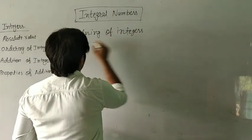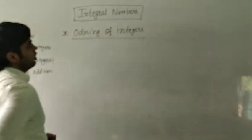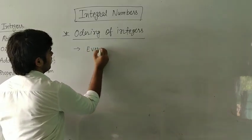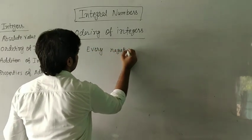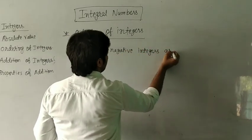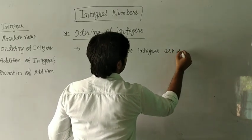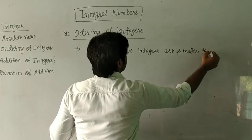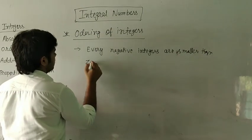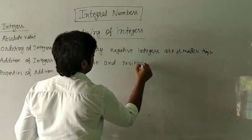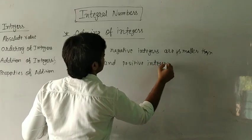Next is ordering of integers. We arrange integers in order. Every negative integer is smaller than zero, and positive integers are greater.